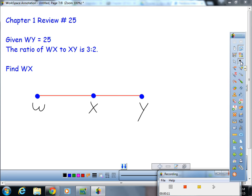It says: given WY = 25 and the ratio of WX to XY is 3:2, find WX.